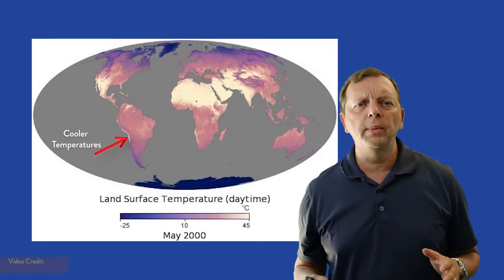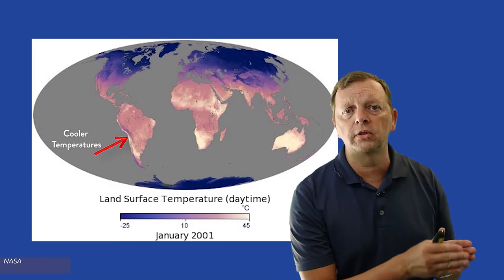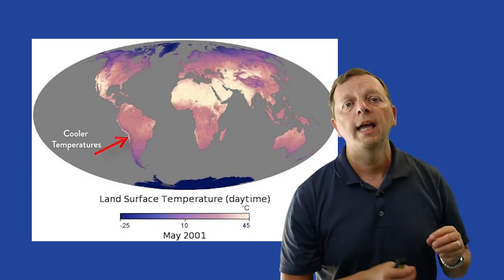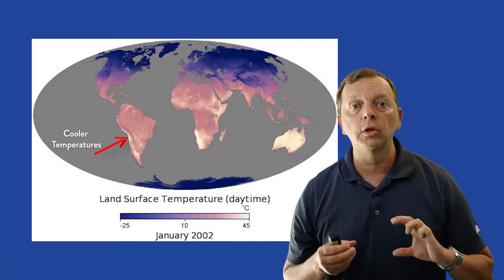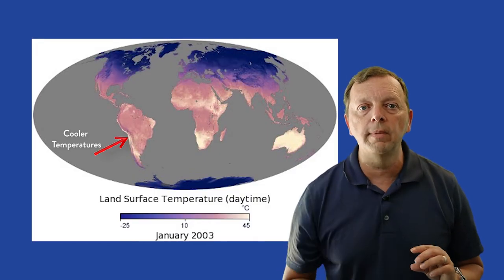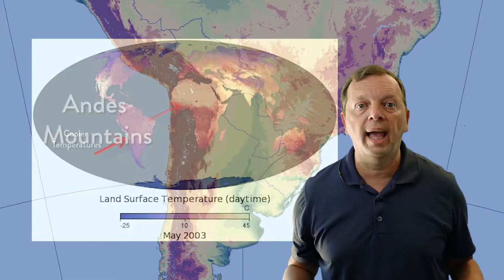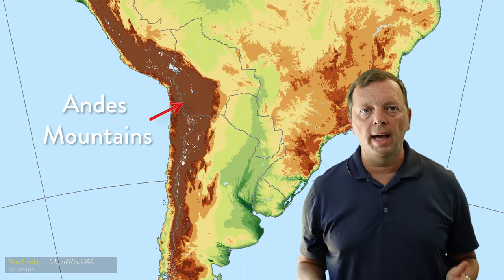This is the reason why we see cold temperatures along the west coast of South America, even though that region is in the tropics, because what is also on the west coast of South America are the Andes Mountains. Elevation impacts temperature.